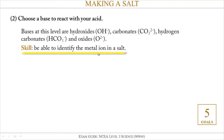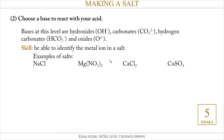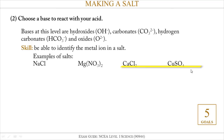What you need to be able to do is look at your salt and identify the metal ion present in the salt. So for example, I've got NaCl and magnesium nitrate which are in the question, but I've also included CaCl2 and CuSO4 as extra examples. If I've got NaCl, the metal part of the salt is sodium. If I've got magnesium nitrate, the metal part is magnesium. In calcium chloride it's Ca, and in copper sulfate it's Cu.